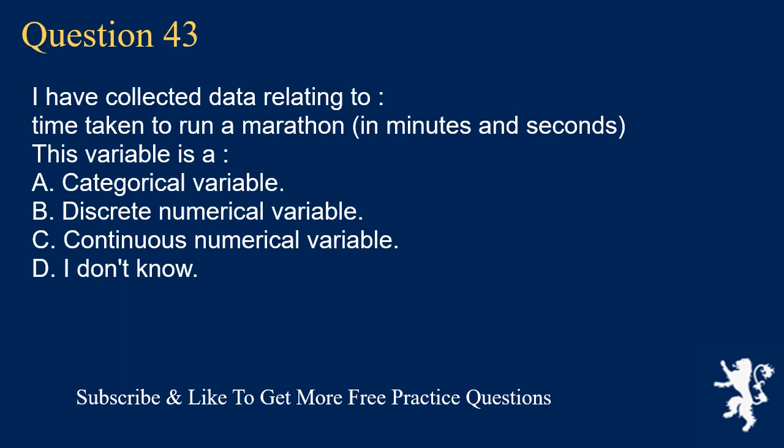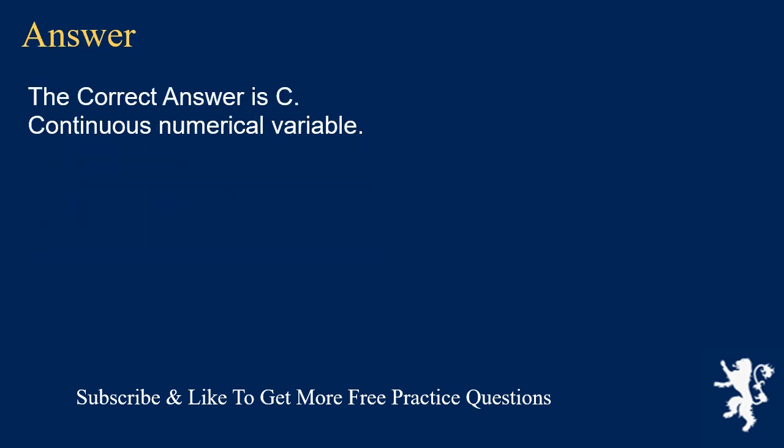Question 43: I have collected data relating to time taken to run a marathon in minutes and seconds. This variable is A. categorical variable, B. discrete numerical variable, C. continuous numerical variable, D. I don't know. The correct answer is C, continuous numerical variable.